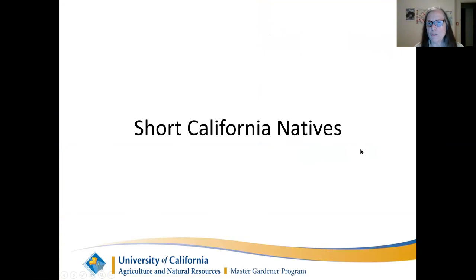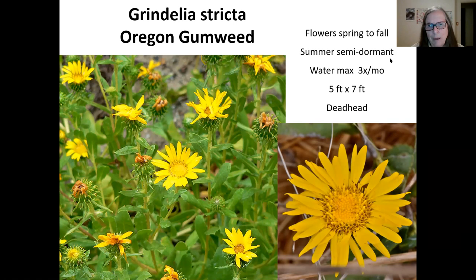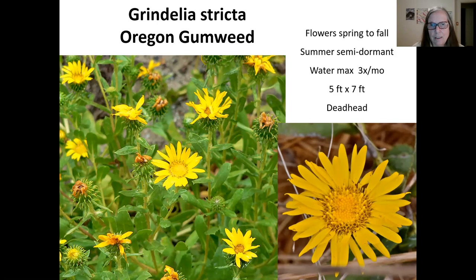Now for the shorter California natives — the herbaceous ones with non-woody stems. The Oregon gumweed has flowers for a long time, with the majority in spring but continuing into fall. Just pick off the dead flowers and it will continue flowering. If you provide enough water, it'll stay beautiful and green all year round. I've grown this in my yard for years — with the flowers trimmed back it stays only about six inches tall, reaching a foot when flowering. Deadheading just means removing the dead flowers.